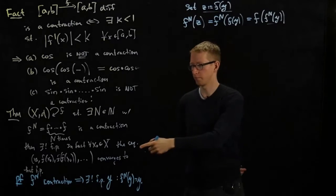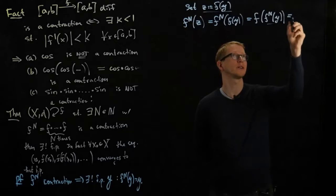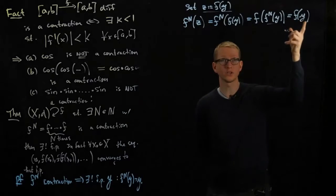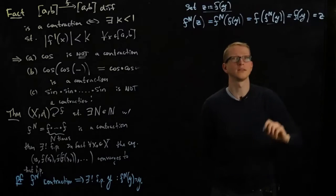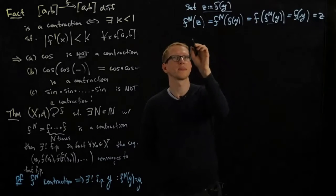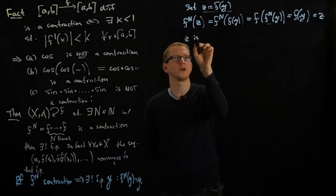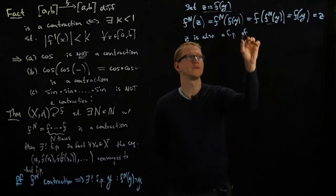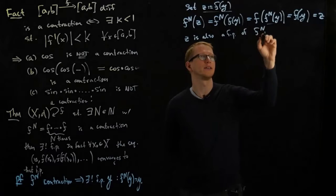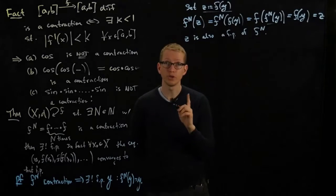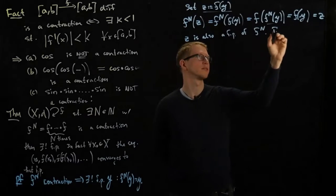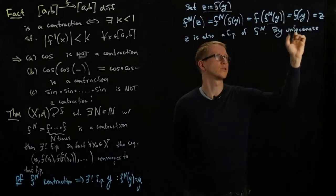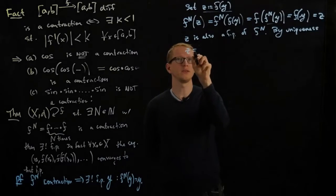And by the mapping contraction theorem from earlier, we know that this is f of y. But by definition of f of y, this is z. In other words, z is also a fixed point of fn. But we know by uniqueness, since fn is a contraction, z equals y.